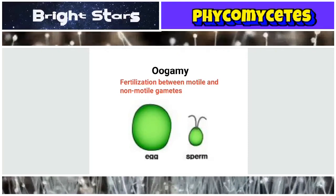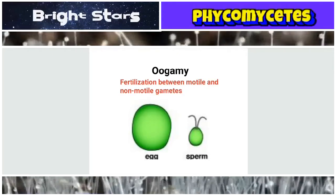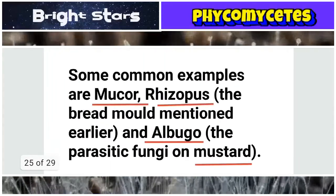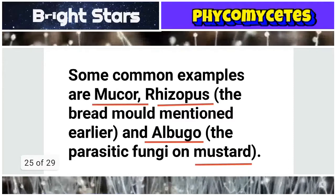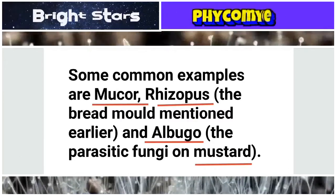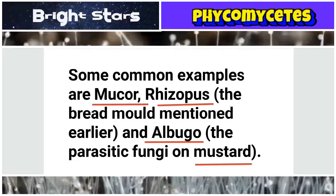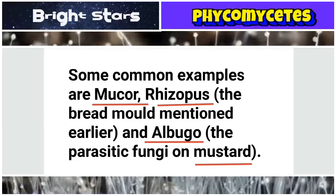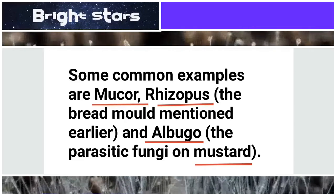Some common examples of Phycomycetes are Mucor, Rhizopus (the bread mold mentioned earlier), and Albugo (the parasitic fungi on mustard). The important genera here are Mucor, Rhizopus, and Albugo, and the host plant mustard.